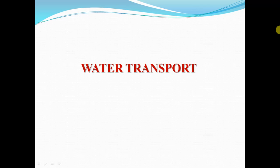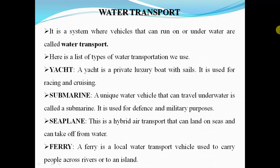In my previous video I have already explained what transport means, what is land transport and its types, and air transport and its types. Transport is basically the movement of people or goods from one place to another. In water transport, we use vehicles that move on or across water. Water transport is a system where vehicles that can run on or under water are used.